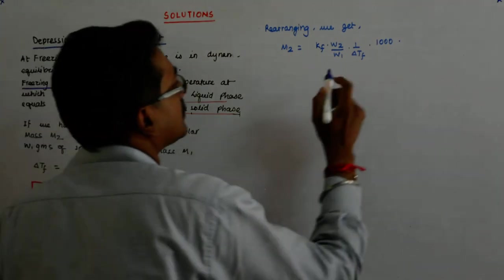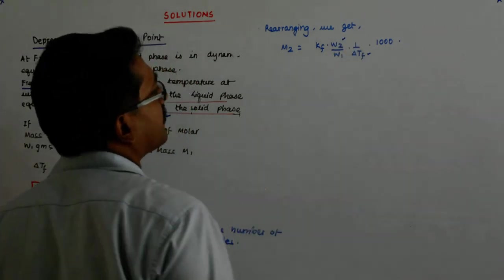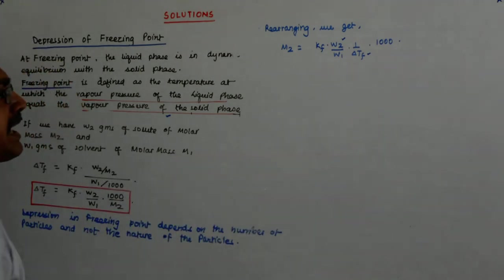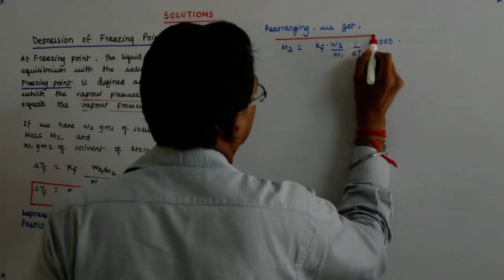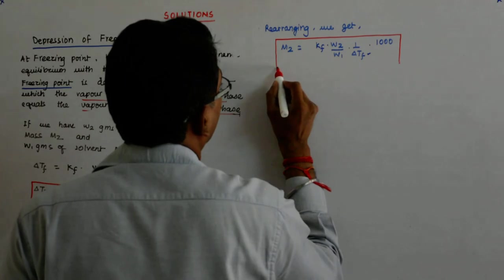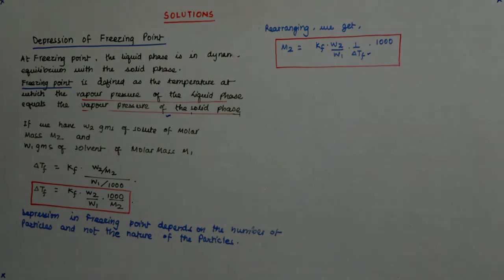If I know the depression in freezing point, the amount in grams of solute that I have added, and the amount in grams of solvent that I have added, then I can determine the molar mass of that substance.